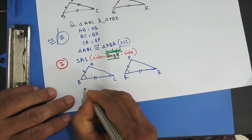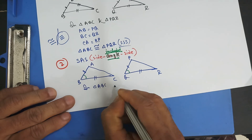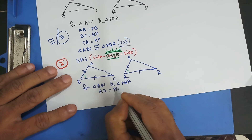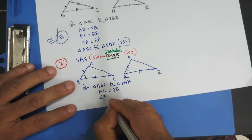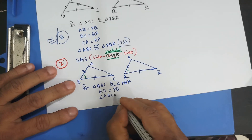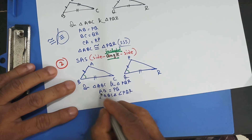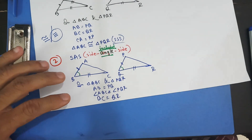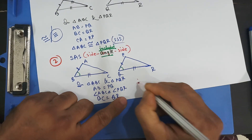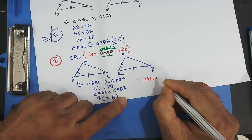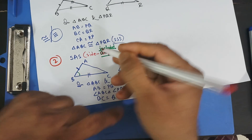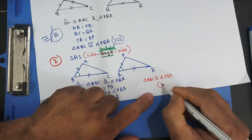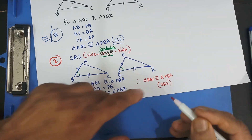In triangle ABC and triangle PQR: AB equals PQ, angle ABC equals angle PQR, and BC equals QR. Therefore, triangle ABC is congruent to triangle PQR. The test of congruency is side included angle side, or SAS.